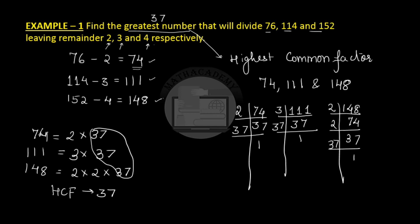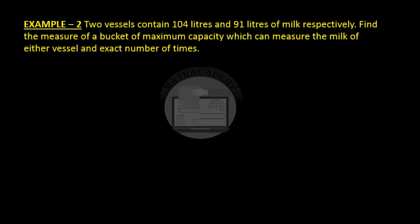Let us see one more word problem. Two vessels contain 104 liters and 91 liters of milk respectively. Find the measure of a bucket of maximum capacity. Maximum this is our keyword here. Maximum means it is somewhat similar to greatest or highest. So that's our keyword and that gives us an idea that we might have to find the highest common factor here. Maximum capacity which can measure the milk of either vessel an exact number of times.